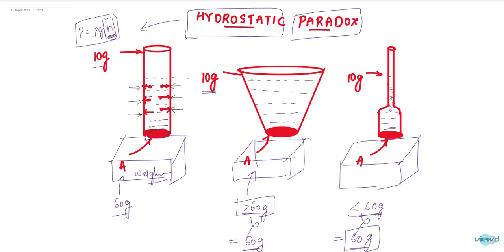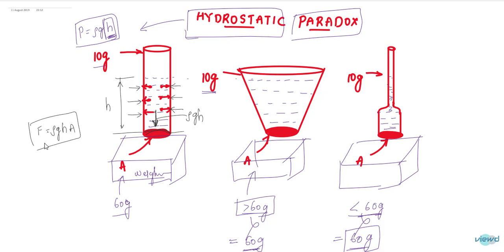What is the pressure acting on the base surface? The height is h, so pressure is ρgh, and the force equals ρgh × A. This is the force acting on the closed base surface. Up to now, this is straightforward.